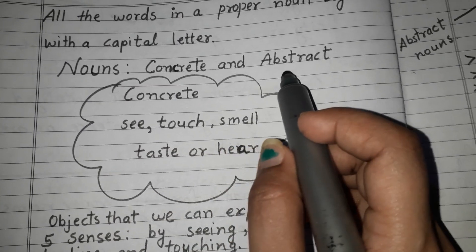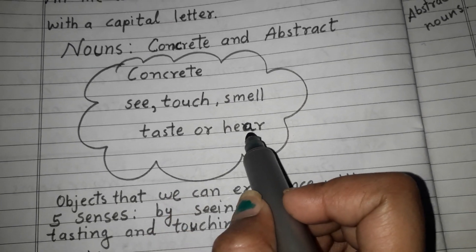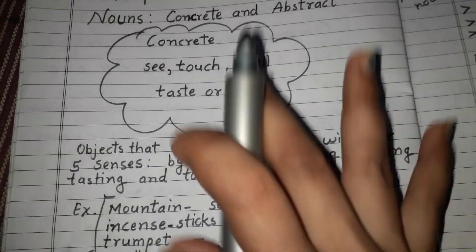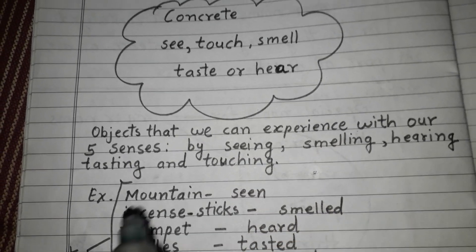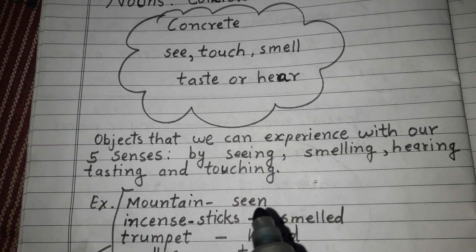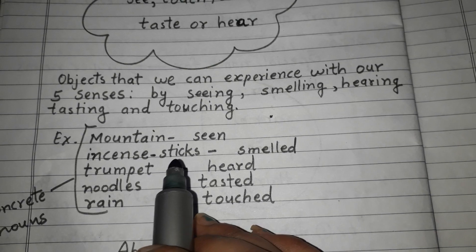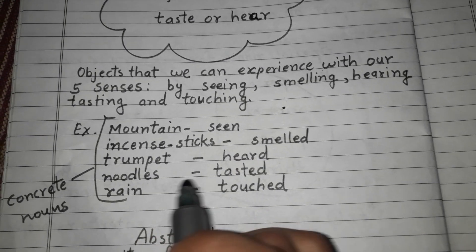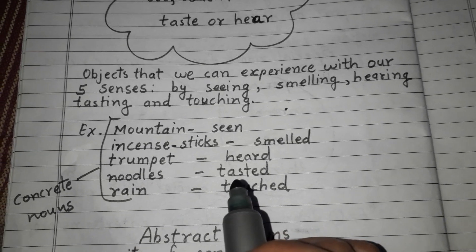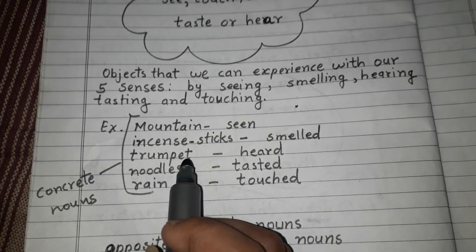The next types of nouns are concrete and abstract. Concrete nouns are things we can see, touch, smell, taste, or hear — objects experienced through our five senses. For example: mountain (we can see it), incense stick (we can smell it), trumpet (we can hear it), noodles (we can taste it), and rain (we can touch it). These are all concrete nouns.